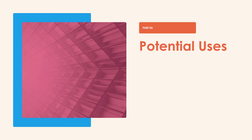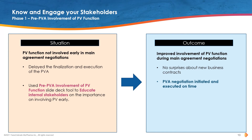Let's take a look at two examples of how the process map can be used throughout the PVA process. Using the example we reviewed in the navigation video, the pharmacovigilance function was not involved in negotiating or drafting the main agreement. As a result, PVA drafting was started too late, causing time pressure during negotiation and delaying the project. The team would like to educate non-PV functions on the importance of involving PV functions early to potentially help avoid delays in finalizing future agreements. The team decided to use the pre-PVA involvement of PV function slide deck to communicate the importance and benefit of involving PV early and the risk of not doing so.